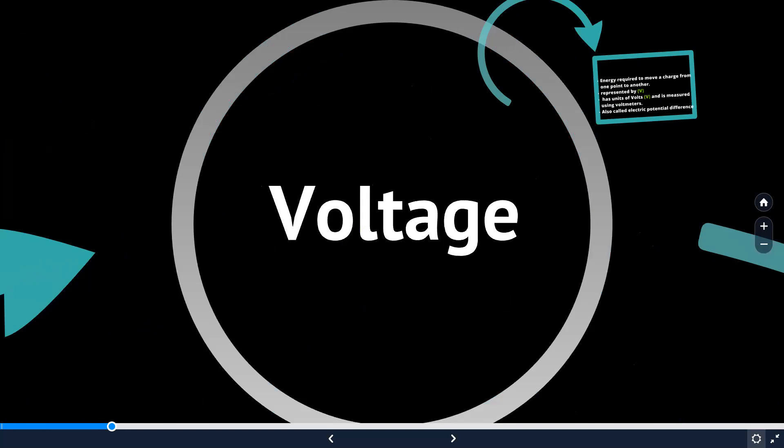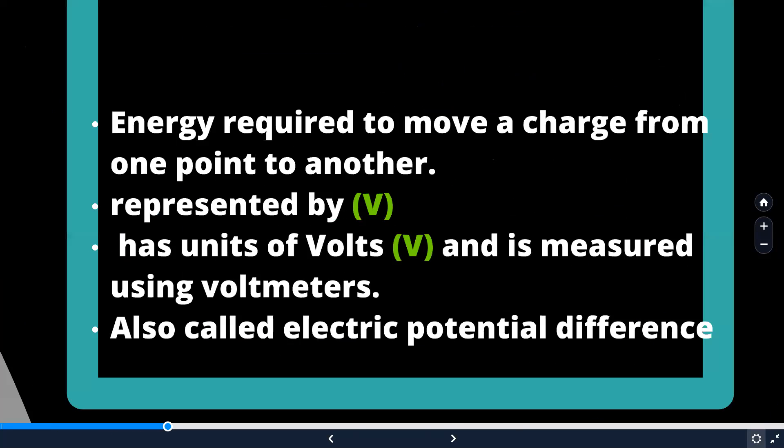Voltage is nothing but the energy required to move a charge from one point to another point. We can use the symbol V to represent voltage. In SI system, voltage can be measured by using the unit volt. For volt also, we will be using the symbol V.